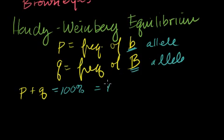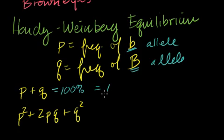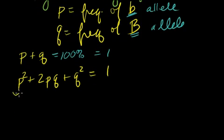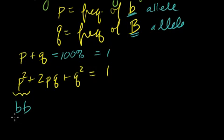Now what if we care about the frequency of the genotypes? We could literally just square both sides of this equation. P plus Q squared gives us P squared plus 2PQ plus Q squared, and it's equal to 1 as well. What is P squared? It's the probability that I get two of the lowercase blue alleles — the genotype lowercase b, lowercase b. I have to get a lowercase b from my first parent with probability P, and then a lowercase b from my second parent with probability P. So it's P times P, which is P squared.